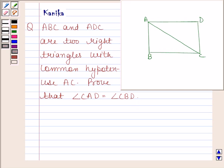We have drawn two right triangles ABC and ADC with common hypotenuse AC.